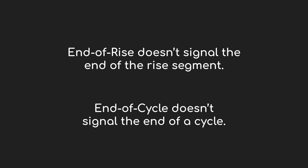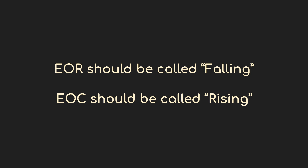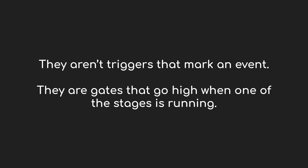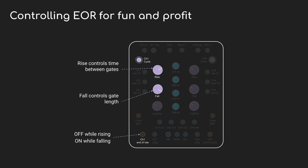For the first part of this recipe, I want to remind you how the end of rise output works. It can really be thought of as a falling signal. As long as channel one is in the falling segment of its cycle, the end of rise signal is going to be high. We want to have a long note with a brief gap in between. The long note corresponds to when the end of rise signal is high, so we set the fall value quite high. The gap in between is based on how long the rise segment is.